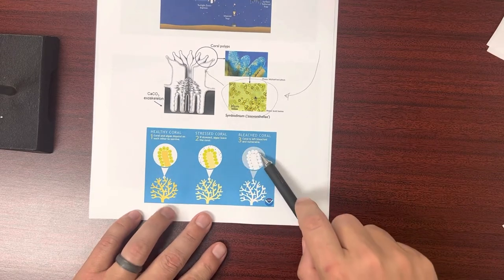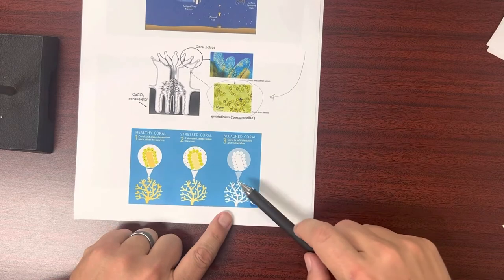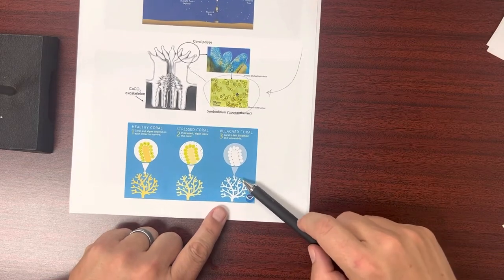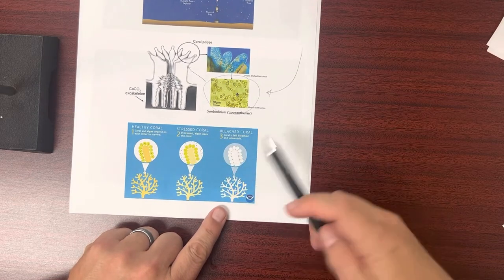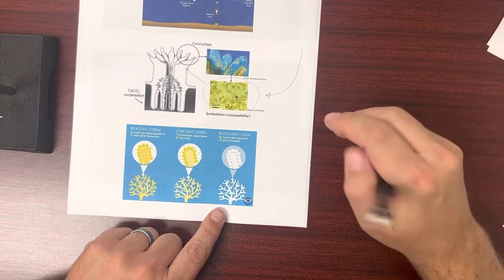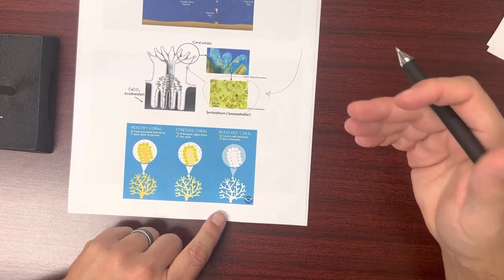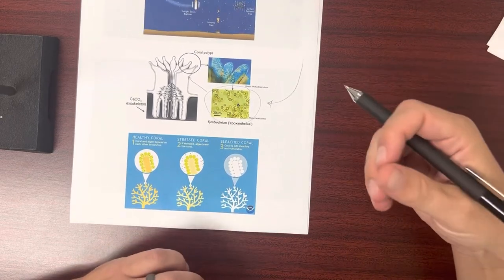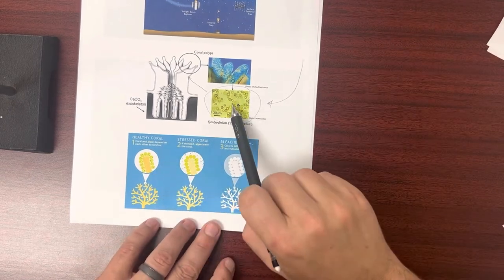But again, you're going to be able to tell the difference here because this is going to be right at the surface. These bleached corals, they're not going to be deep underwater. The deep reef corals can also be white in appearance because they never had any algae in the first place.